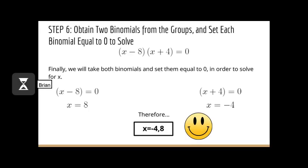Finally, we take both binomials and set them equal to zero in order to solve for x. When we take our first binomial, x minus 8, and set it equal to zero, we get x equals 8. Our second binomial, x plus 4, when set equal to zero, gives us x equals negative 4. Therefore, we get two answers: x equals 8 and x equals negative 4.